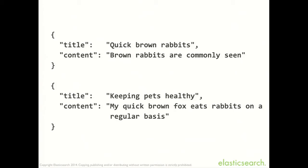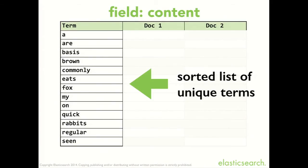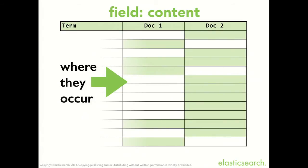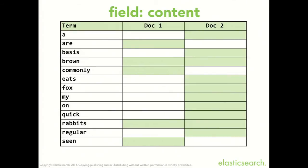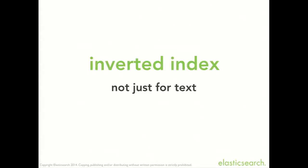Normalization can mean lots of things, but typically lower-casing is a good example. So this just becomes a list of quick, brown, rabbits, brown, rabbits, are, commonly, seen — with capital letters lower-cased. Then we build a sorted list of unique terms that occur across all of our documents and mark where they occur. Now, if we want to do the query for 'brown fox', all we have to do is look up 'brown' in the sorted terms list, 'fox' in the sorted terms list, and we've got a result. Document one matches one term, document two matches both terms. This structure is called an inverted index, and it's not just for text — it can equally be used for dates, numbers, booleans, geolocations, geoshapes. Pretty much any type of data can be represented in an inverted index.